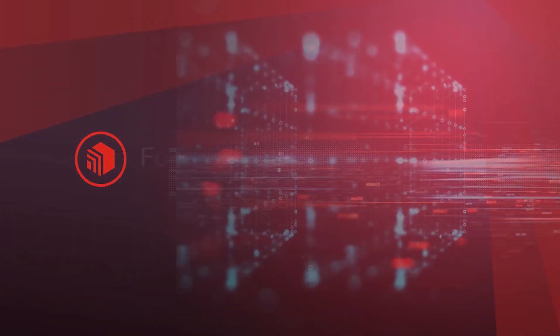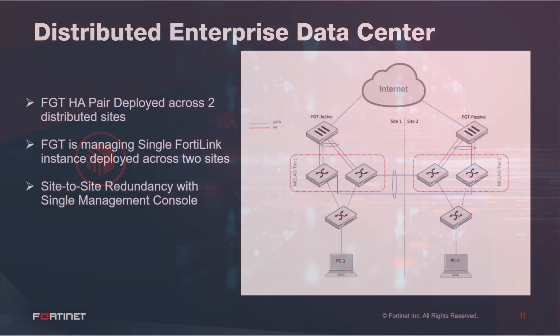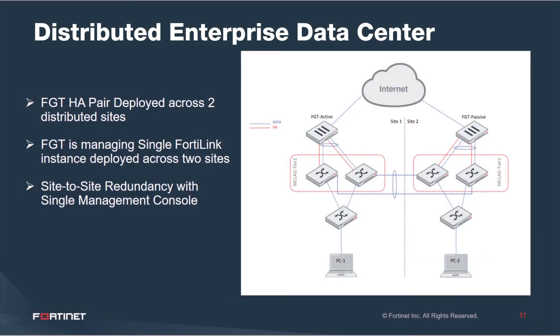The third case we are going to look at is HA site redundancy with central FortiLink. The use case that came from an NFR here is an FGTH pair deployed across two distributed sites. FortiGate manages a single FortiLink instance deployed across two sites, and this is how site-to-site redundancy is achieved with a single management console. Now let's look at some of the details.